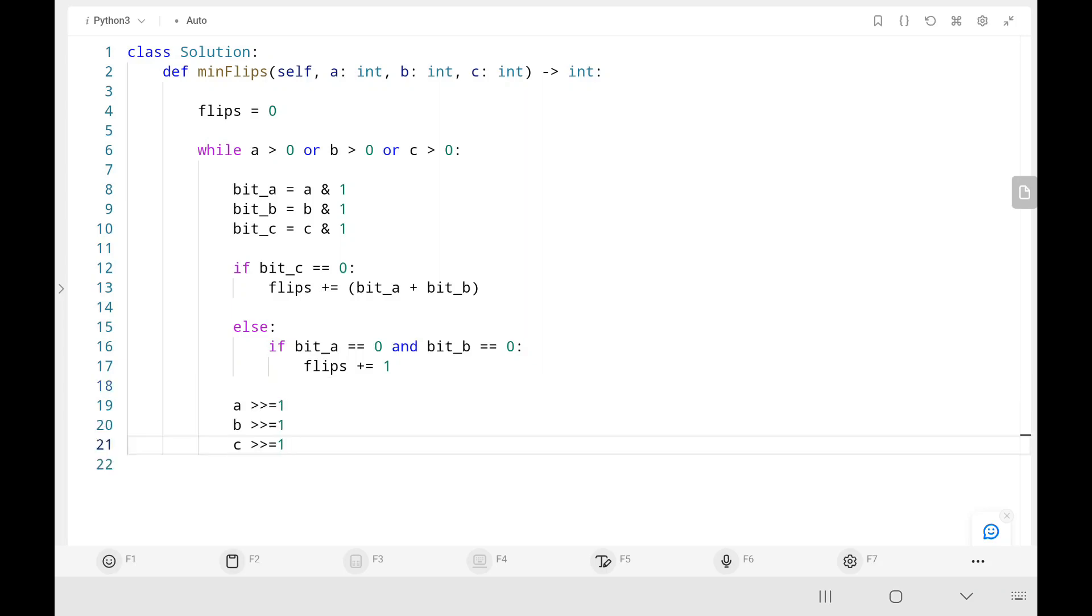So then we will be shifting rightwards. So basically we are discarding the rightmost values here. Then finally I will return the flips variable. That's all the code is. Now we will run the code.